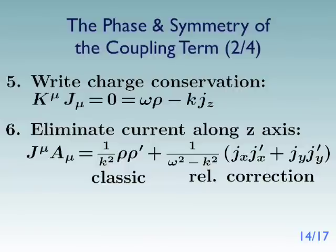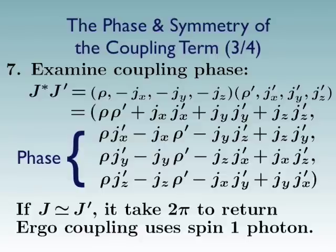Now where are we going to see the phase? Well, the phase comes by multiplying the two currents together and keeping every term that results.